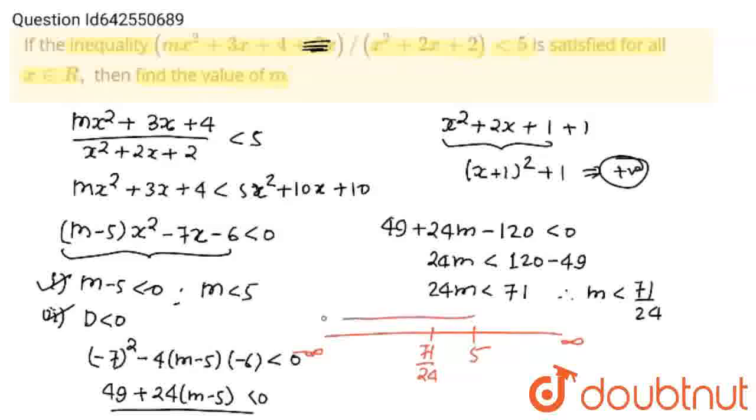This says less than 5 and this says less than 71 upon 24. So intersection of both is this region, and so m should belong to minus infinity to 71 upon 24. But also we can write m should be less than 71 upon 24, answer.